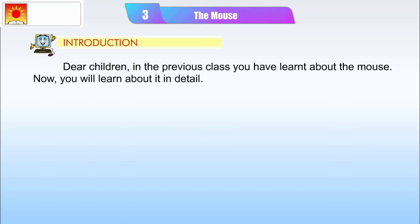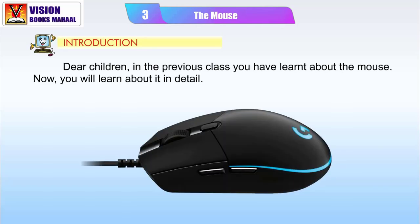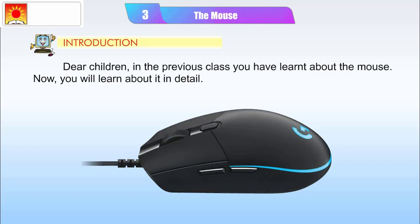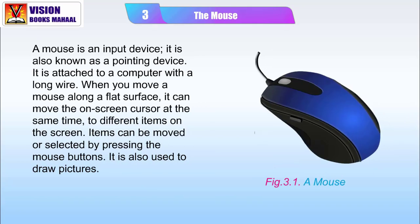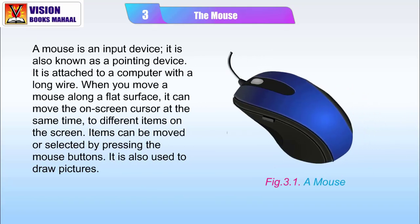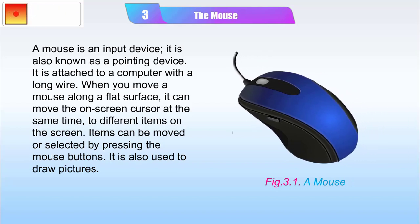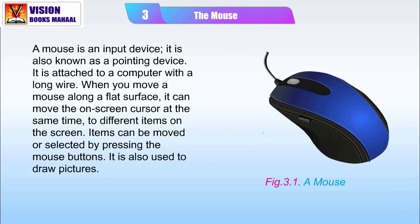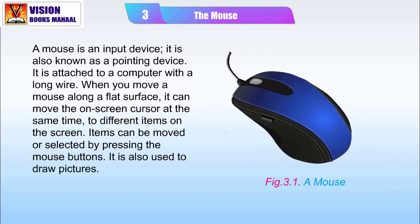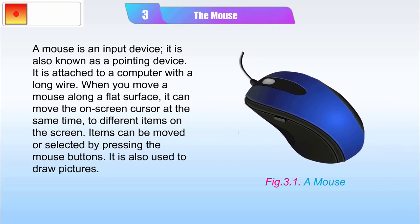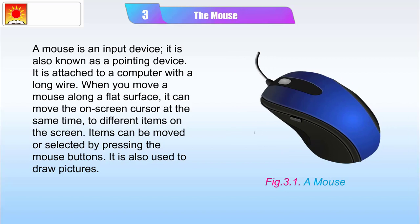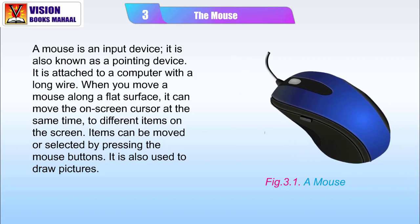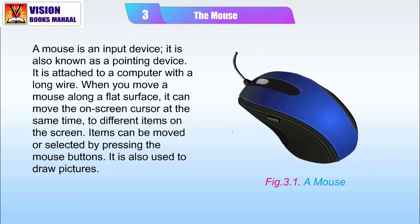Introduction. Dear children, in the previous class you have learnt about the mouse. Now you will learn about it in detail. A mouse is an input device. It is also known as a pointing device. It is attached to a computer with a long wire. When you move a mouse along a flat surface, it can move the on-screen cursor at the same time to different items on the screen.